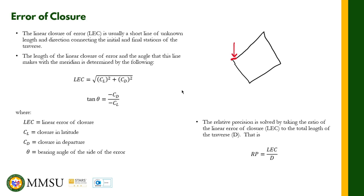If we get the sum of the north latitude and the south latitude, it should be zero to close the polygon. If it does not become zero, the difference is CL — that's the closure in latitude.